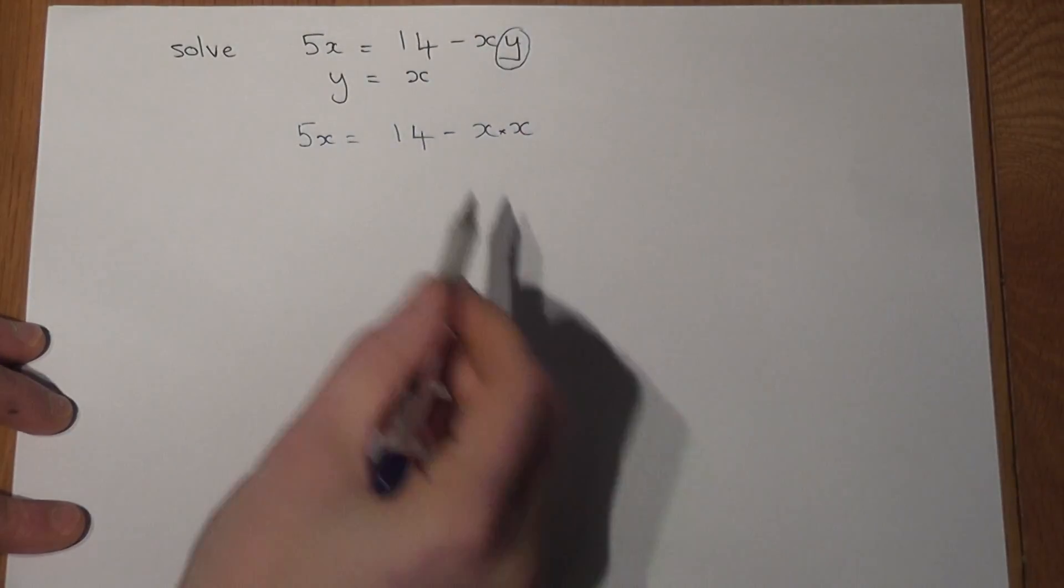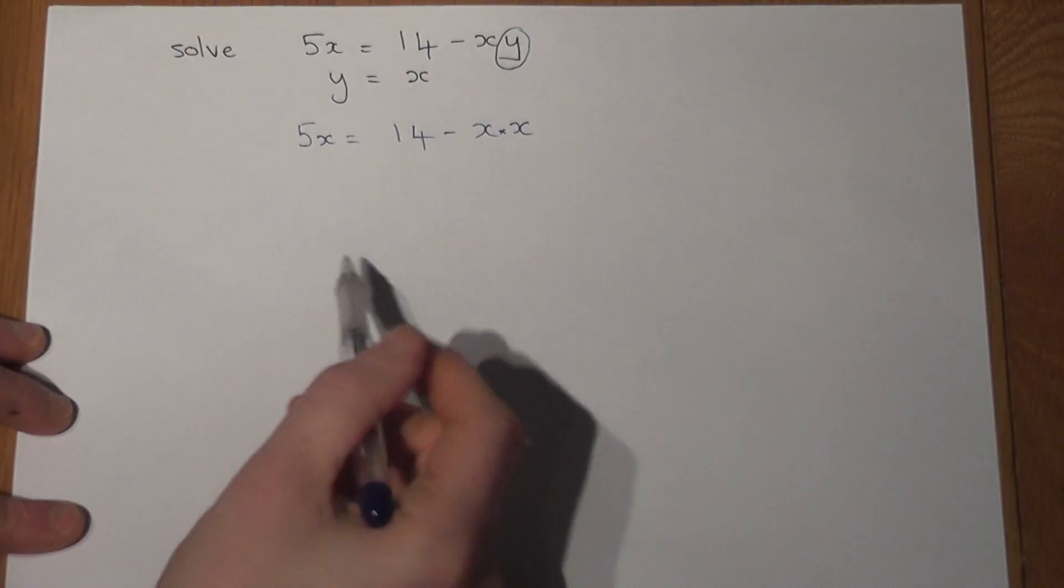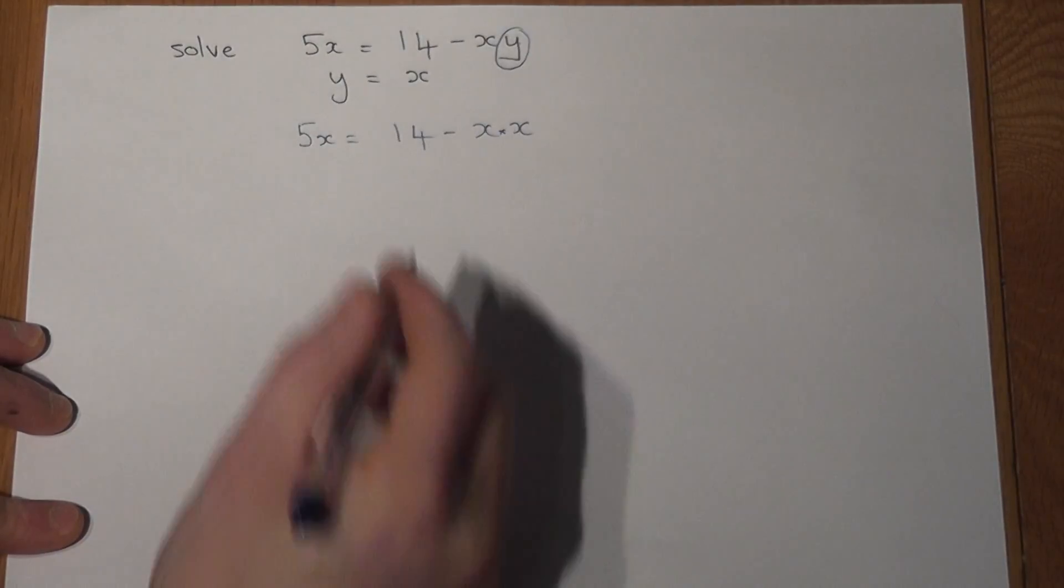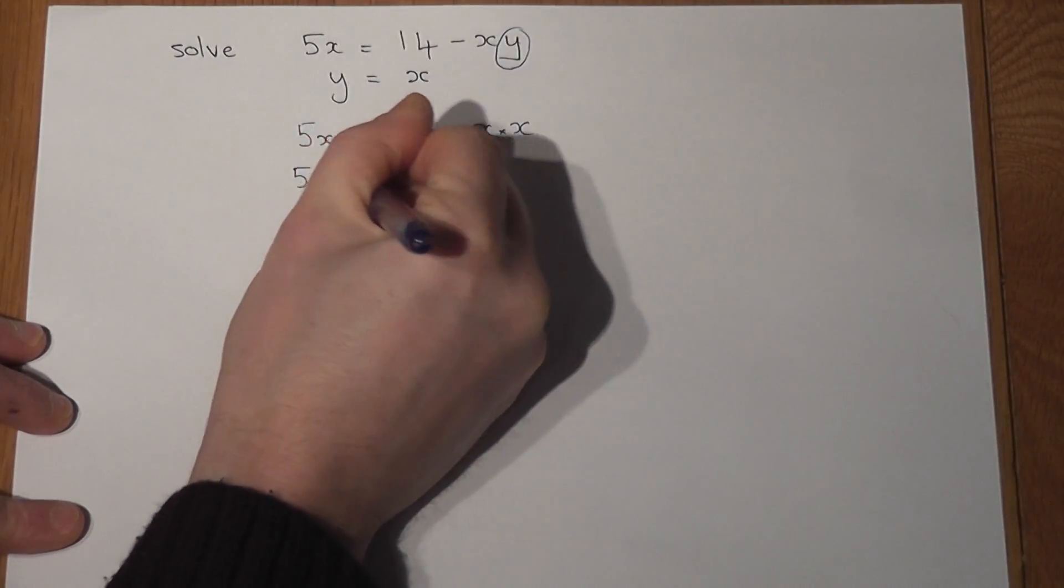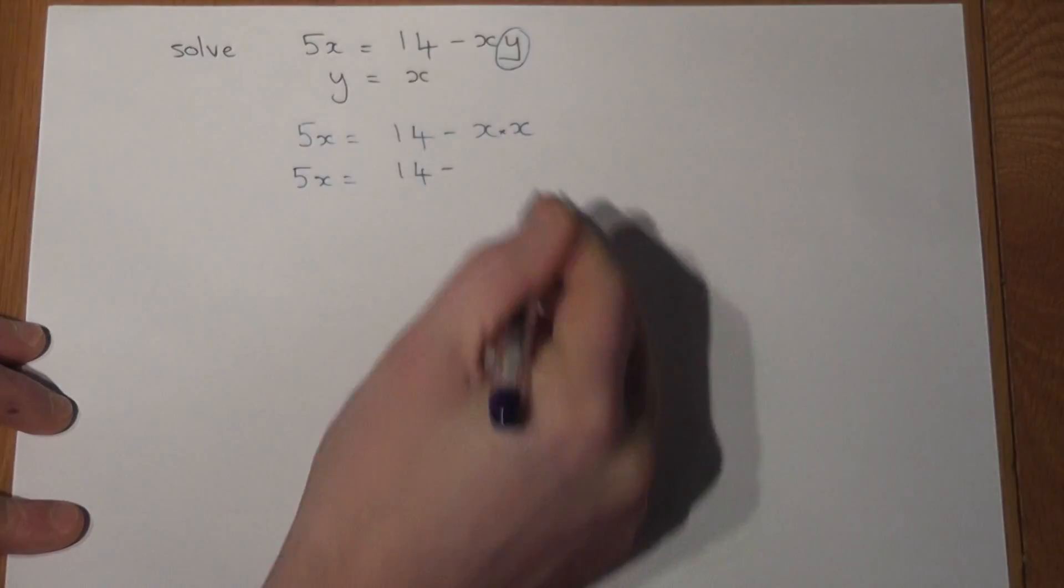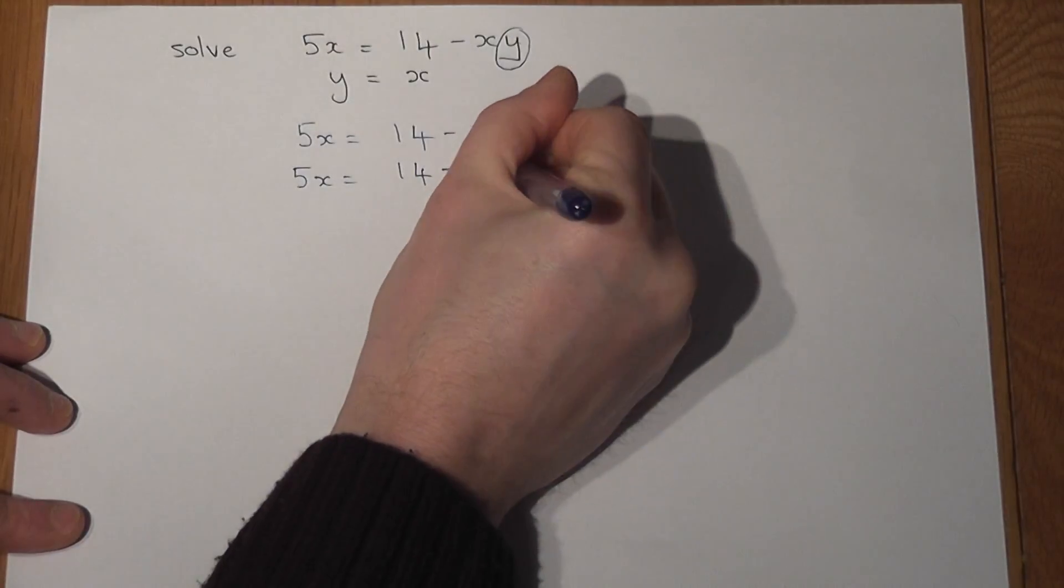x times y, y is the same as x, so that becomes x times x, which if it's worked out becomes 14 minus x squared.